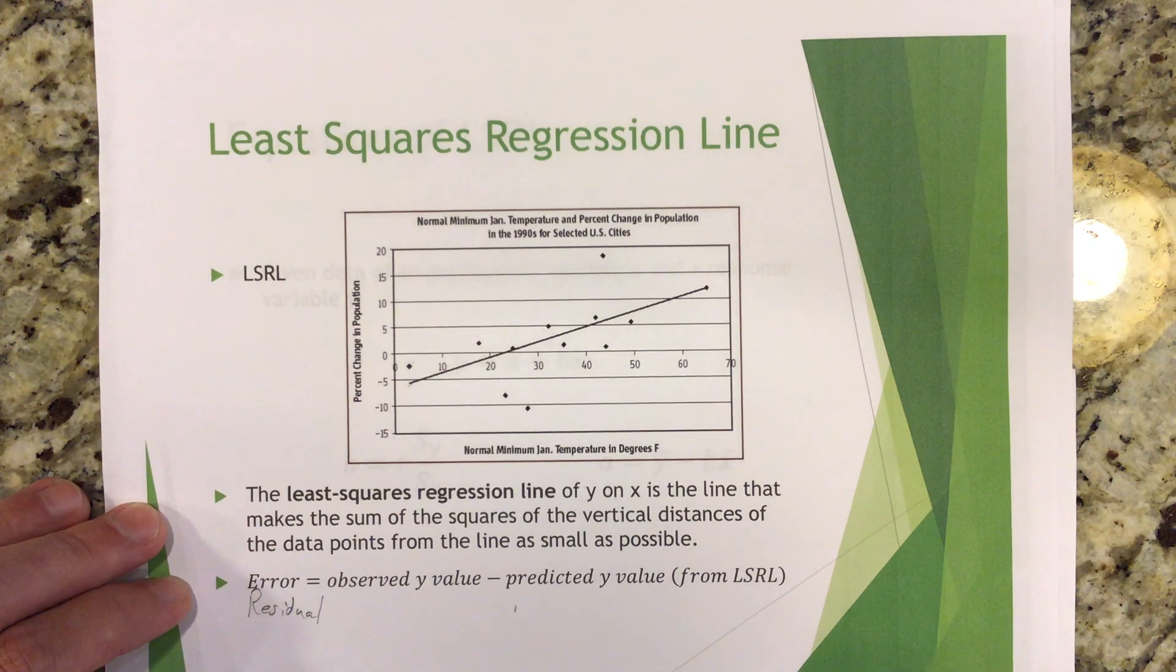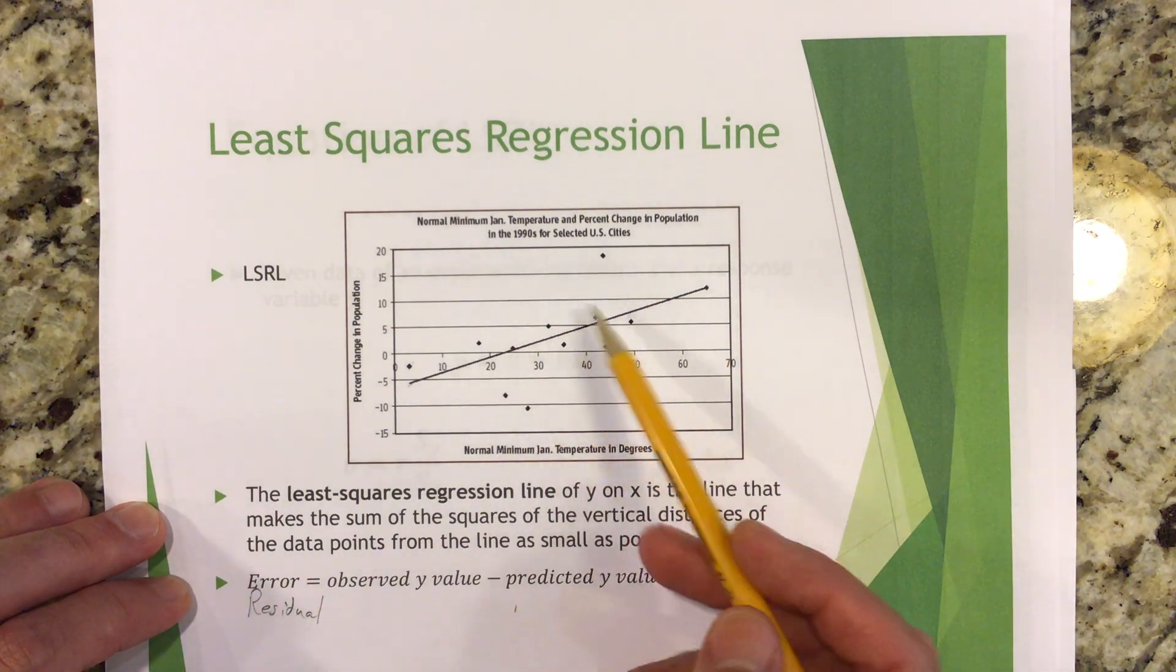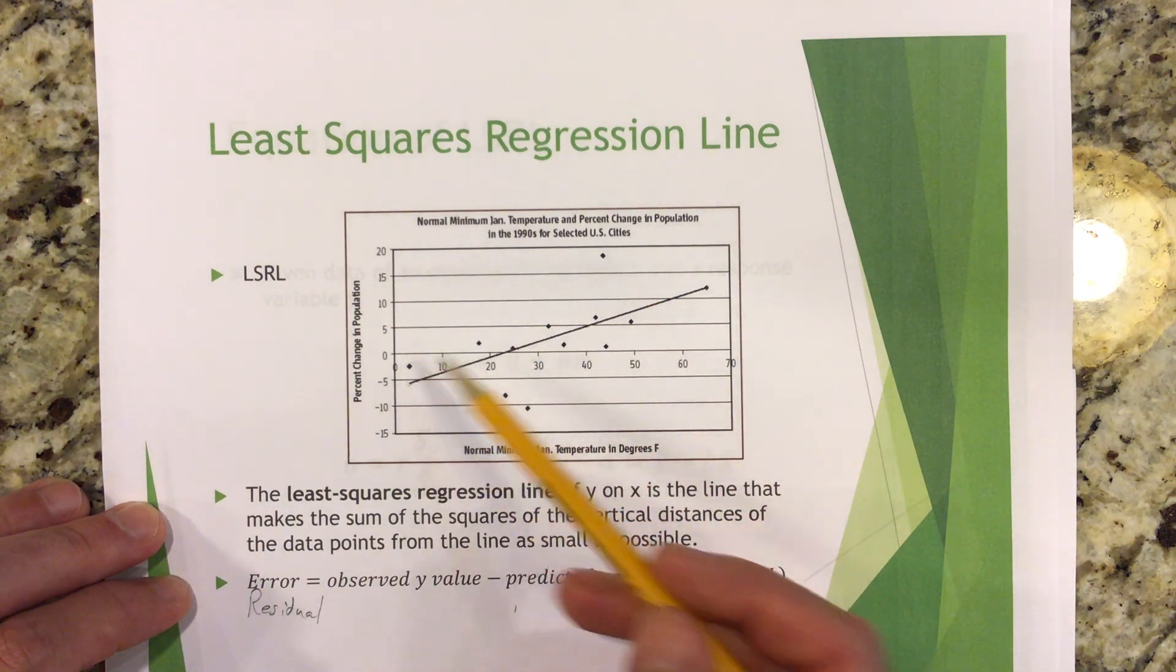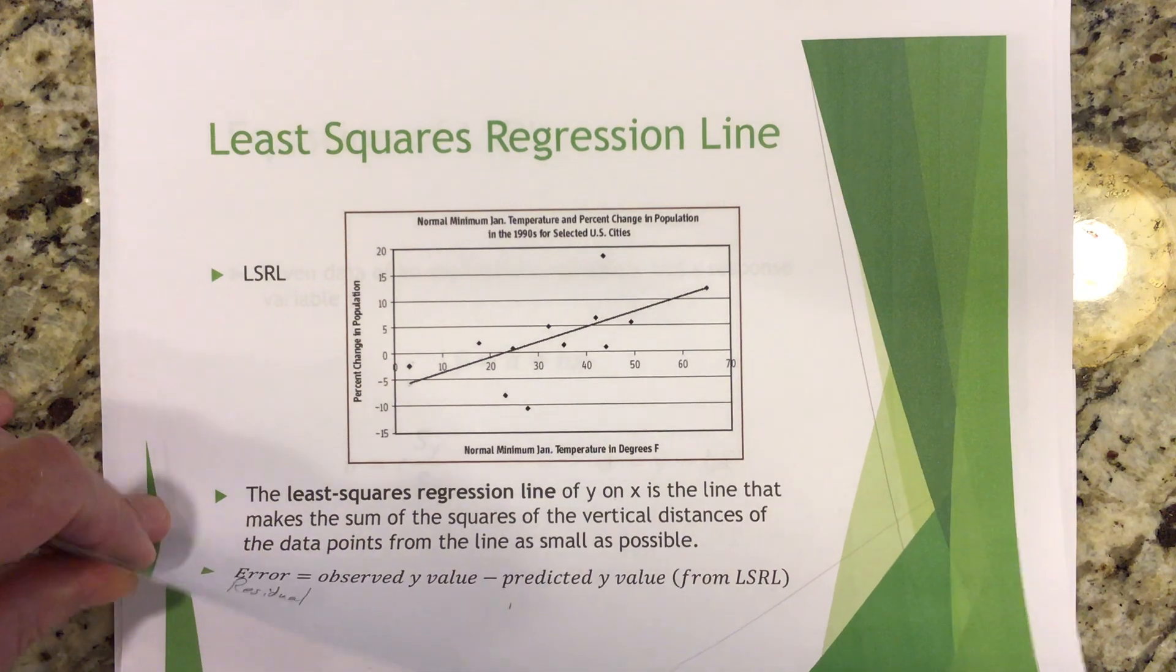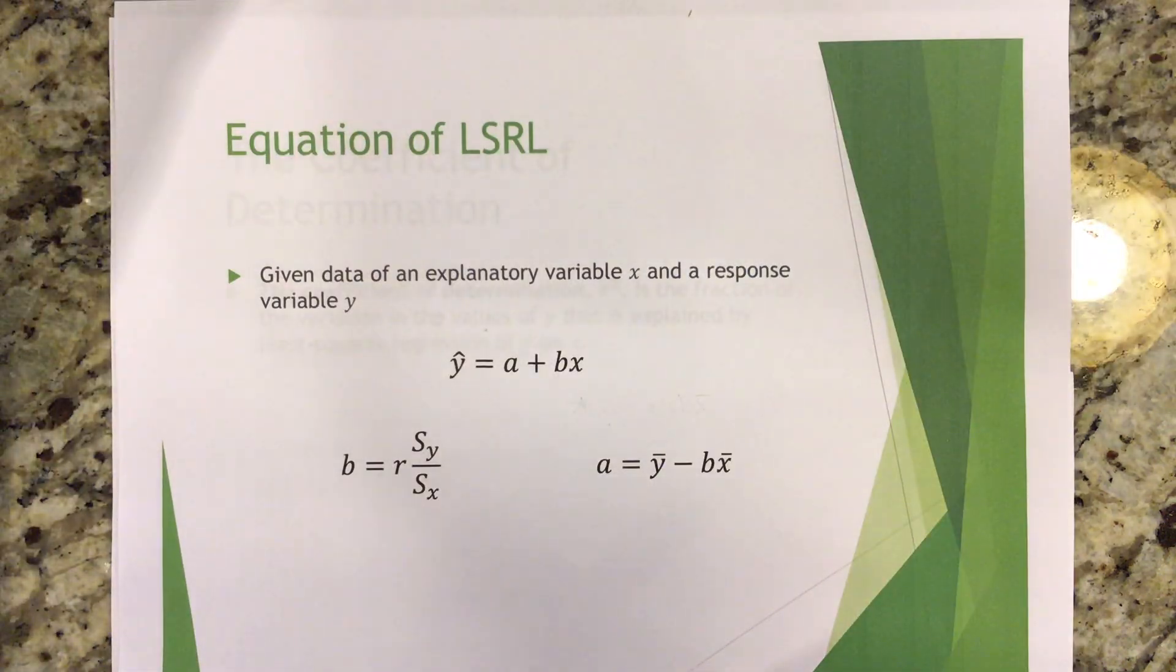Now, students will often say, well then okay, great. Why do we have to do this whole square process? Well, because if I didn't square, then the positives and negatives would cancel each other out. Okay, so what we're doing is we're squaring all the values, so now when I find the sum, things aren't canceling out on me.